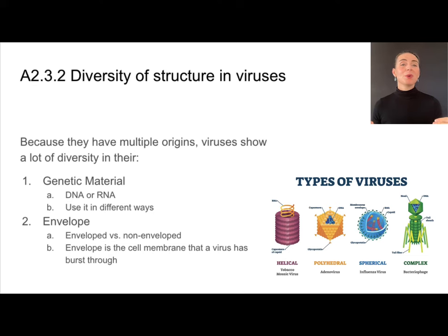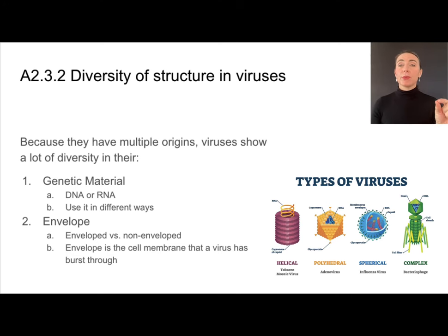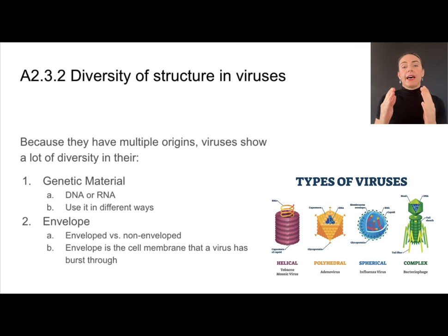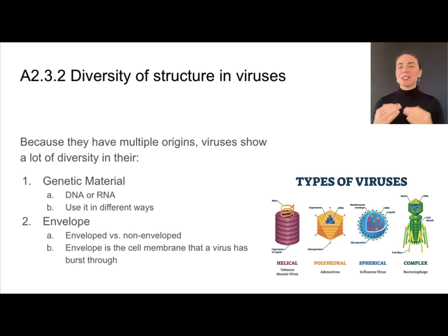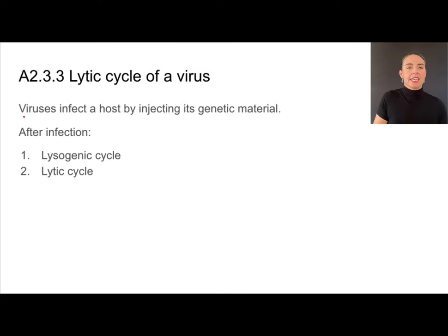Because of their multiple origins, we'll see lots of different variety in these viruses. Even though all of them have genetic material, what that genetic material is — DNA or RNA — and how it's used can also vary. In addition to the protein capsid, some viruses are also going to have an envelope, but not all of them. This is a great example of unity and diversity.